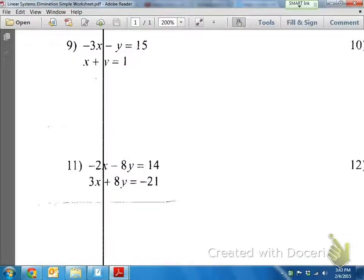Perfect. And again, with elimination, it makes it really easy when the two terms are inverses of each other, so negative 2 and positive 3 are inverses, but negative 8 and positive 8y are inverses. Perfect. Let's add them together.